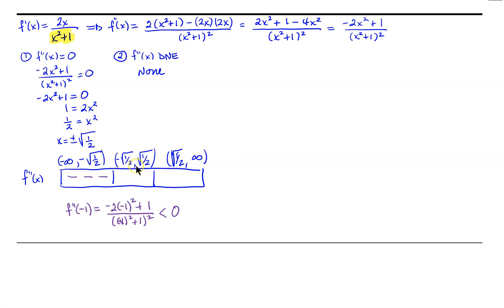Now let's choose a value in our second interval. 0 is a nice convenient value between those two endpoints. So f double prime at 0 is negative 2 times 0 squared plus 1, over the quantity 0 squared plus 1, all squared. Our denominator will remain positive. Our numerator: the first term will be 0 plus 1, so that's a positive value. A positive number divided by a positive number means our second derivative is positive.